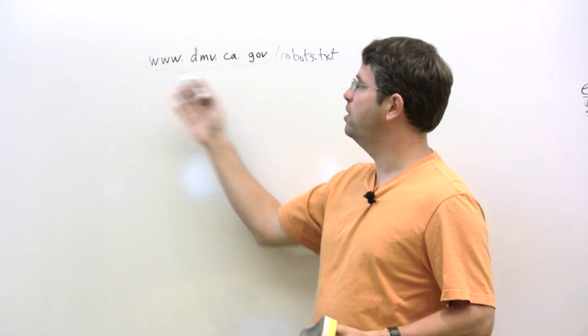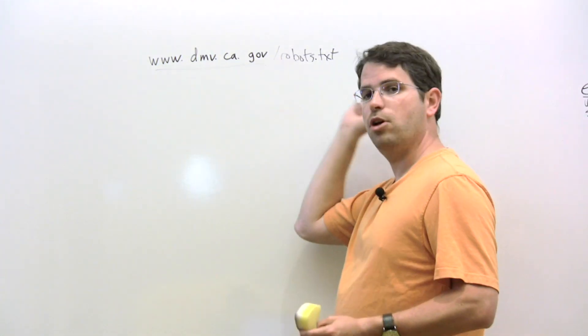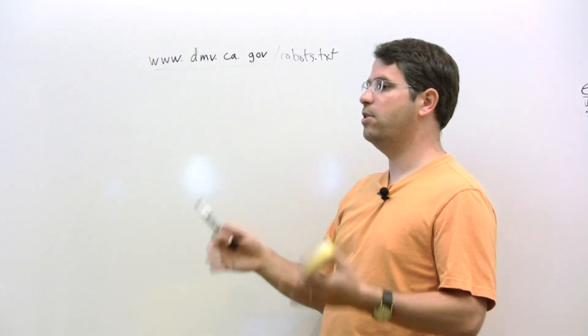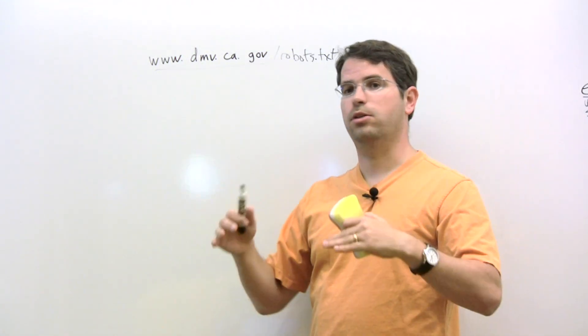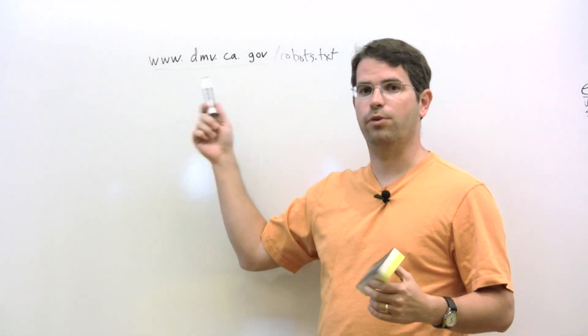So that's the particular policy reason why we can sometimes show uncrawled URLs. Because, even though we didn't fetch the URL itself, we still know from the anchor text of all the people that point to it that this is probably going to be a useful result.